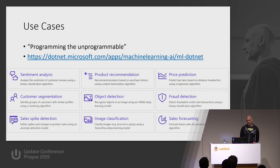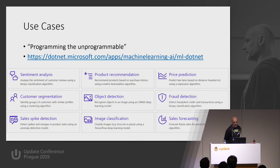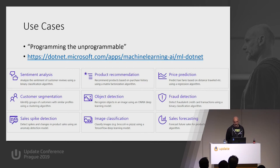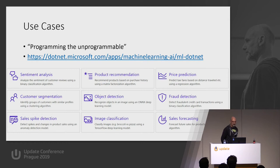ML.NET's intention is to program the unprogrammable. Typical use case scenarios include sentiment analysis of text, customer segmentation, sales spike detection, detecting objects in photos, recommending products — things that Amazon and Netflix do all the time — predicting prices of real estate, second-hand cars or taxi fares, fraud detection, sales forecasting, and more. There's a whole range of problems you can tackle with machine learning in a very easy way.